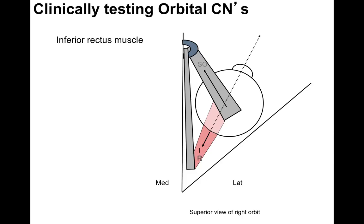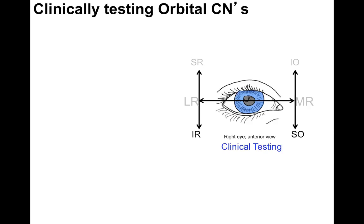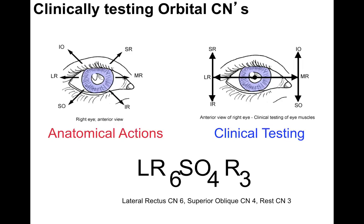Now you have the patient look down. The superior oblique and inferior rectus muscles are tested as shown: the superior oblique is isolated from the inferior rectus by adducting the eye first, and the inferior rectus is isolated from the superior oblique by abducting the eye first. This is how you correlate clinical testing of muscles on the right with the anatomical actions on the left.